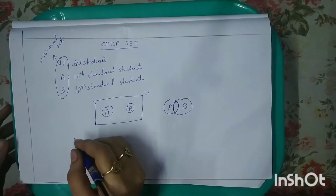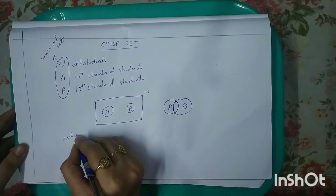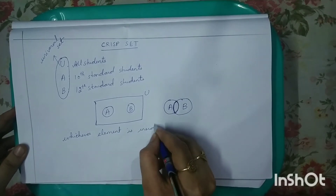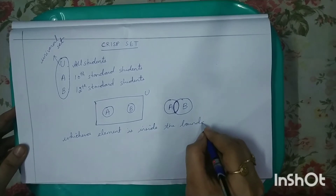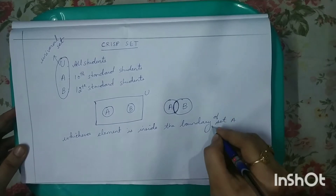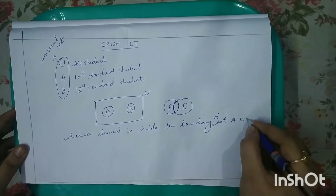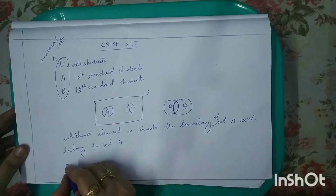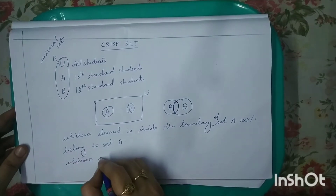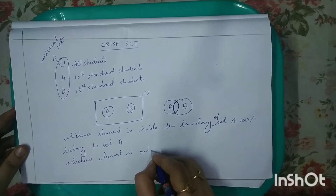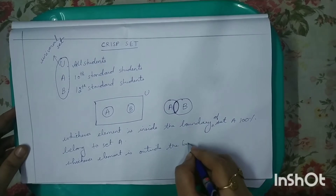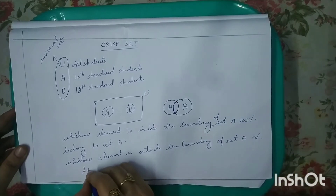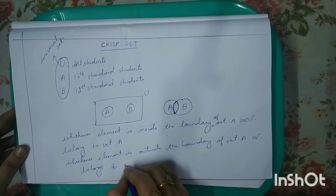Now let me write the rule for this. Whichever element is inside the boundary of set A, 100% belongs to set A. Next, whichever element is outside the boundary of set A, 0% belongs to set A.